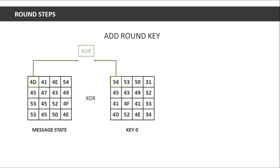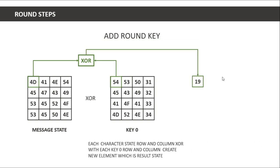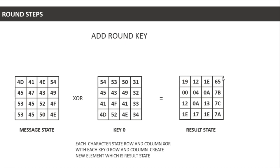For add round key, we have the message state and key zero. We XOR each corresponding element: position row zero column zero of the message state XORed with position row zero column zero of key zero, and so on. Each row and column pair creates a new element in the result state.